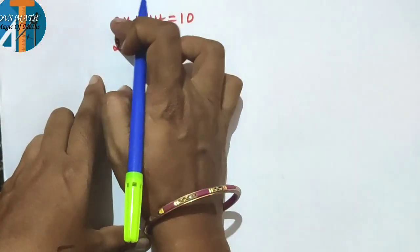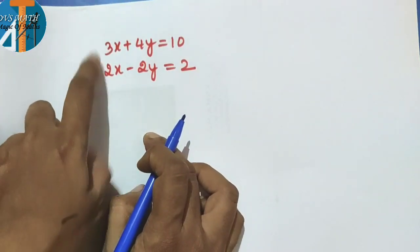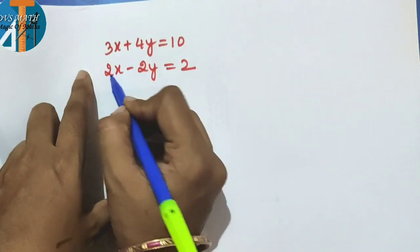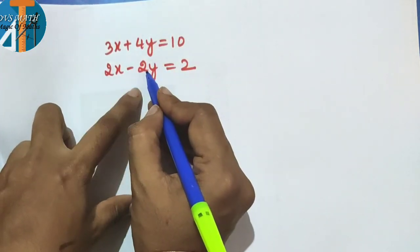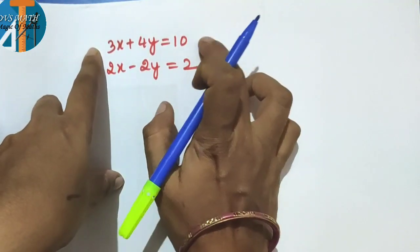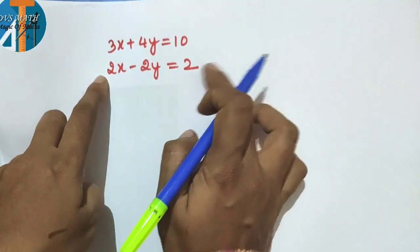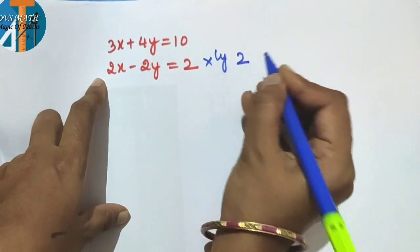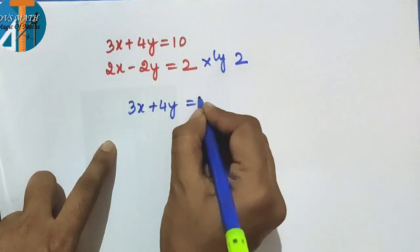Now for another example: the equations are 3x plus 4y = 10 and 2x minus y = 2. Here the coefficients are not factors of each other — 3 and 2 give 6 — so to make the x coefficients the same, multiply the second equation by 2. That gives 2 times 2x = 4x, 2 times y = 2y, and 2 times 2 = 4. Take the first equation as it is: 3x plus 4y = 10.